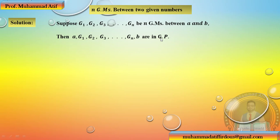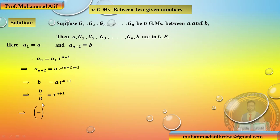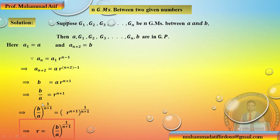اس sequence میں first term A ہے، اور total terms n+2 ہیں کیونکہ g₁ سے gₙ تک n terms ہیں اور A اور B add کریں گے تو n+2 ہو جائے گا۔ Last term aₙ₊₂ = B ہے۔ Formula لگائیں: aₙ = a₁ · rⁿ⁻¹، یہاں n کی جگہ n+2 رکھیں گے۔